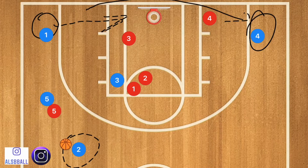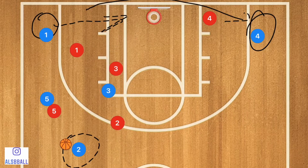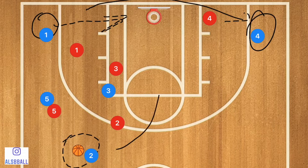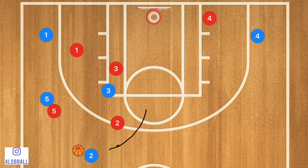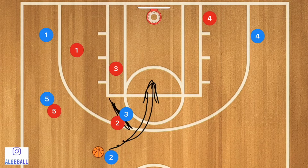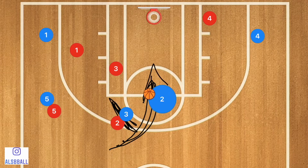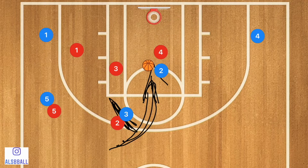Once player two gets the ball, player five goes inbounds and now a couple of things could happen. Player two could drive towards the rim — that's the idea behind having player four out there. If player two gets to the rim, or if player three screens for him to go to the rim, player two could drive right at the rim and collapse the defense.